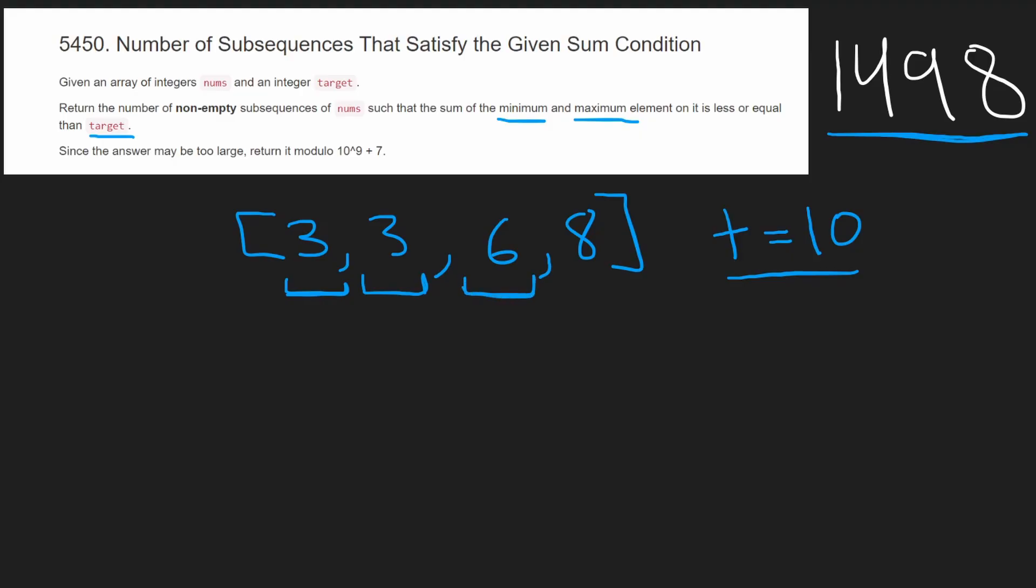We can also add this 6 to it. 3 plus 6 is 9, less than or equal to 10. But this 8, 3 plus 8 is 11. So that we cannot include. We cannot include this 8. So we can only include these three numbers. Or a better way to think about it, and how we're going to compute it is if we're definitely including this 3 as the minimum value in our subsequence, how many other values can we add in this case 2?